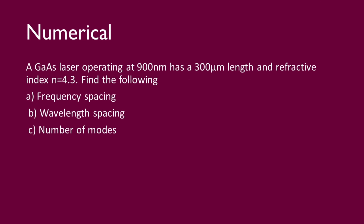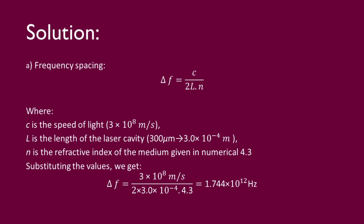Now for the numerical. The Gallium Arsenide laser operates at 900 nm with a 300 micrometer cavity length and refractive index 4.3. First, we solve for frequency spacing. Speed of light c is 3×10⁸ m/s. The cavity length 300 micrometers converts to 3×10⁻⁴ m. Substituting into delta f equals c over 2Ln: 3×10⁸ divided by 2 × 3×10⁻⁴ × 4.3 gives a frequency spacing of 1.744×10¹² Hz.